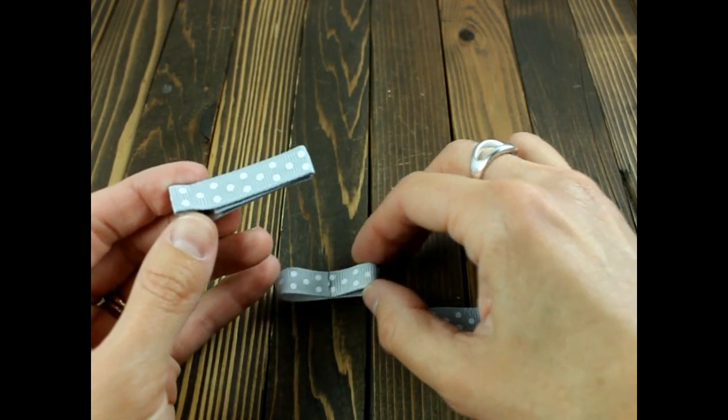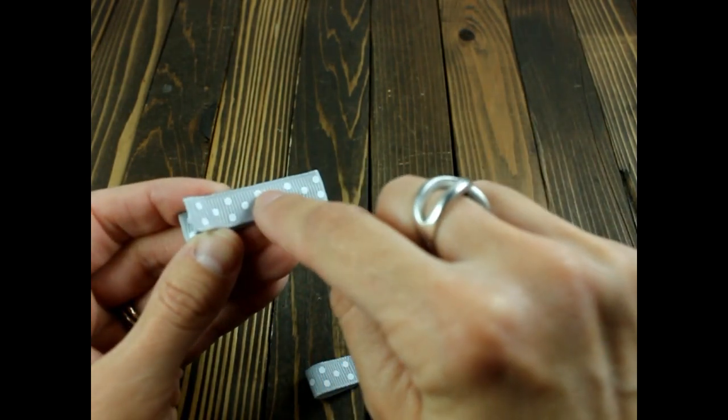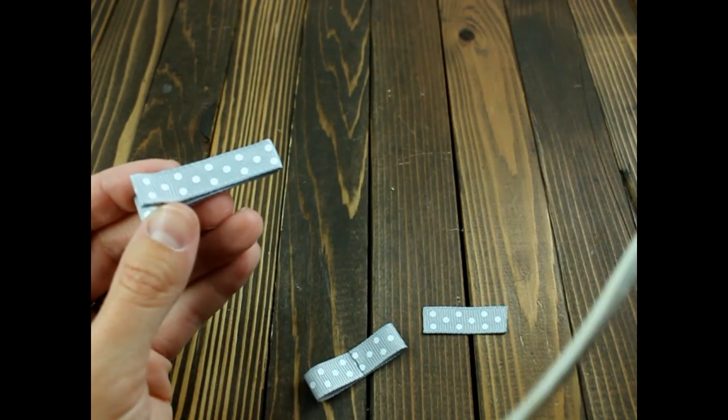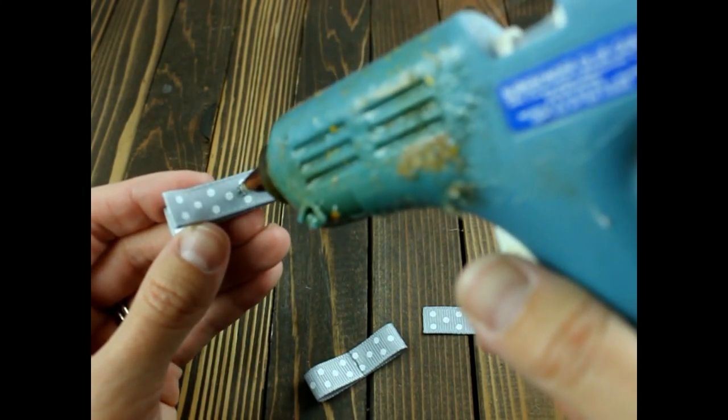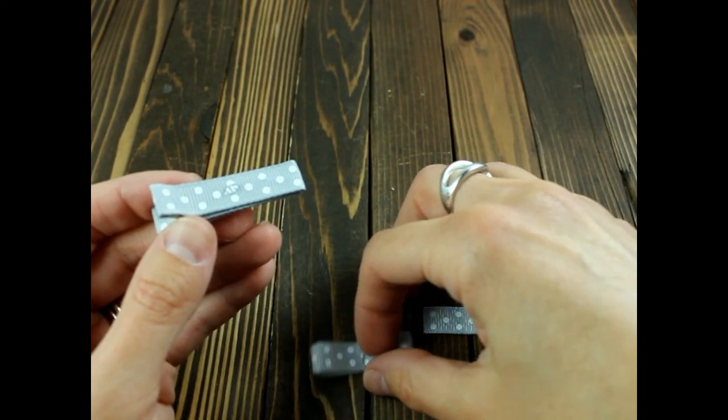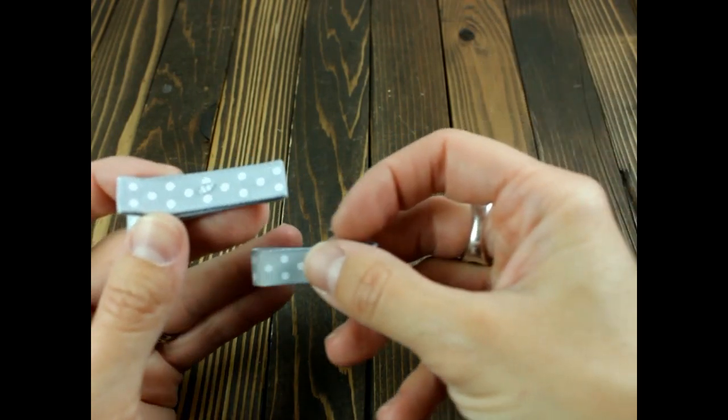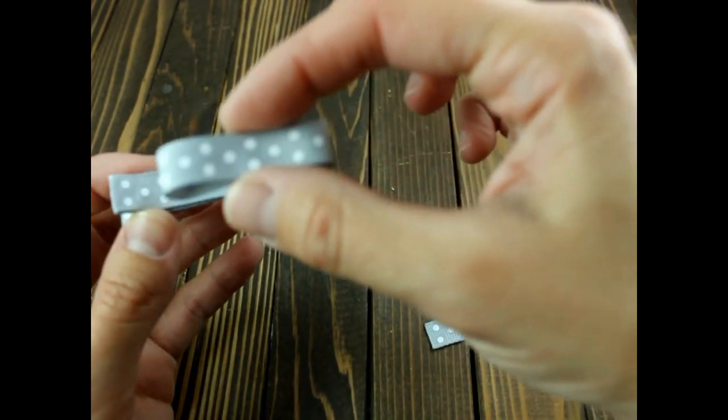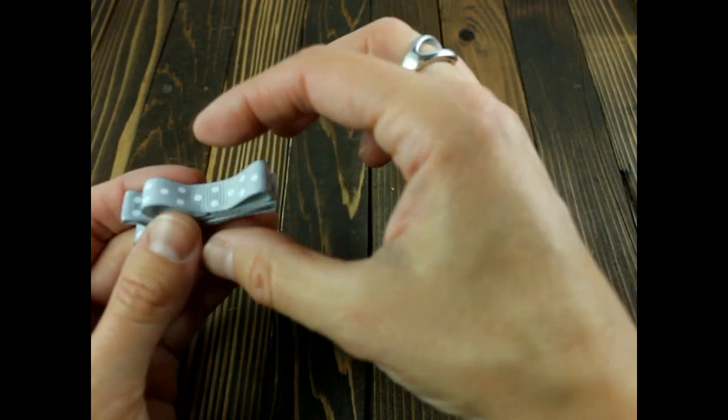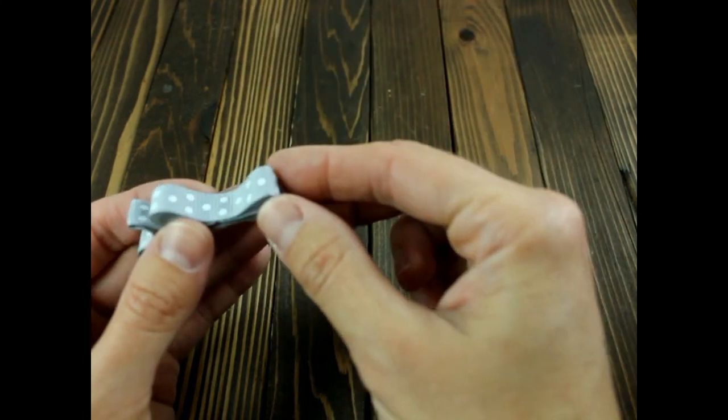Then what I'm going to do is put a little piece of hot glue right in the center of my clip. Then you take this little piece here and flip it around to the back, and then you will put your piece right on the top, and then make sure that the edge of your bow here goes on the edge.